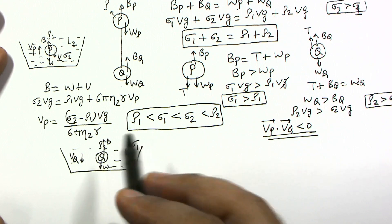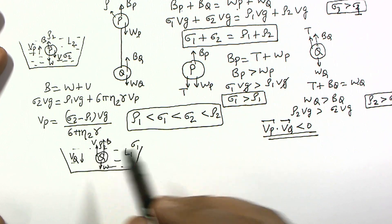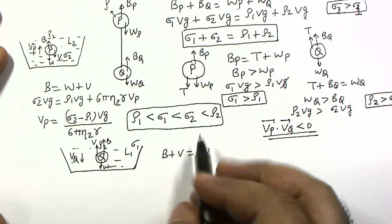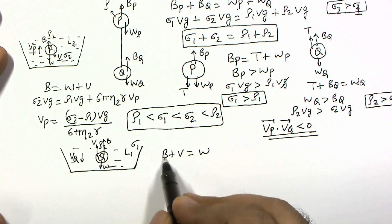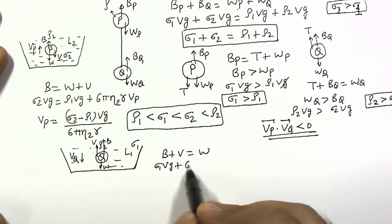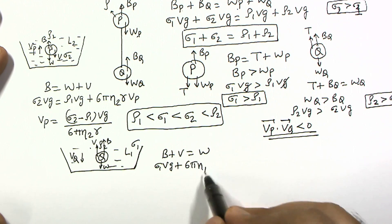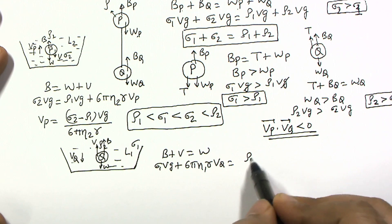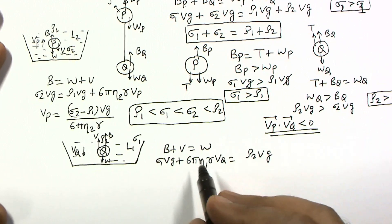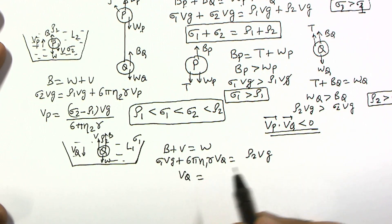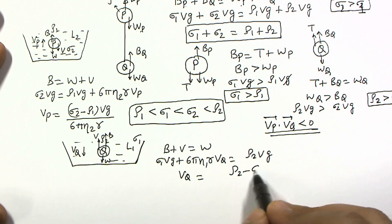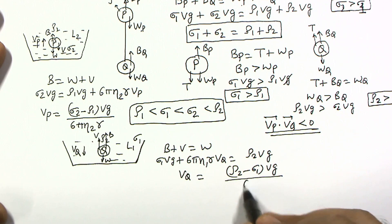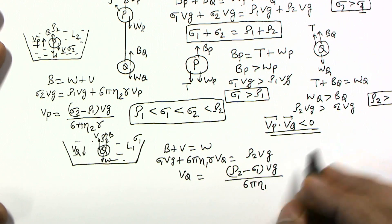For sphere Q alone in L1: balancing forces gives B = W + viscous force, i.e., σ1·V·g + 6π·η1·r·VQ = ρ2·V·g. So terminal velocity VQ = (ρ2 − σ1)·V·g / (6π·η1·r), directed downward since ρ2 > σ1.